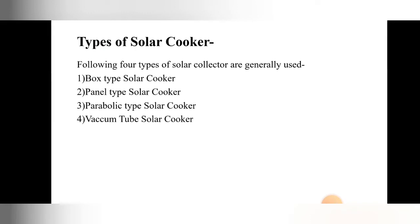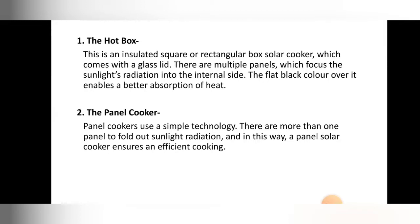Generally there are many types of solar cookers, but there are 4 main types: box type solar cooker, panel type solar cooker, parabolic type solar cooker, and vacuum tube solar cooker. Now that we've covered the basics of what a solar cooker is, its applications, advantages and disadvantages, we'll look at all 4 types one by one.